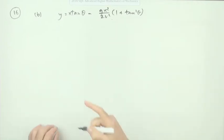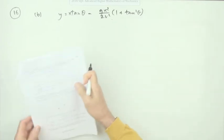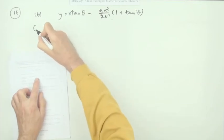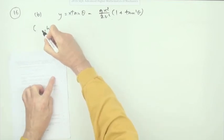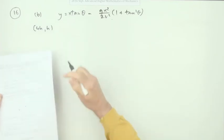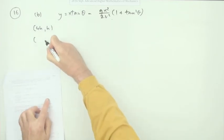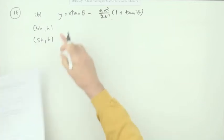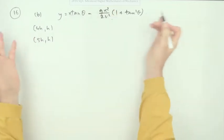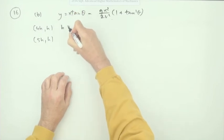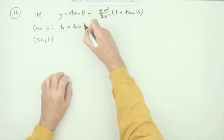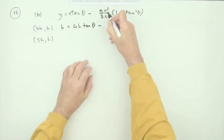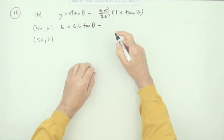I'll just have to put in the information and get simultaneous equations. It's at a height of h when it's traveled 4h. There'll be another equation, still at height h when it's gone 5h. For the first one, h equals 4h tan theta minus 16 g h squared over 2V squared times 1 plus tan squared theta.